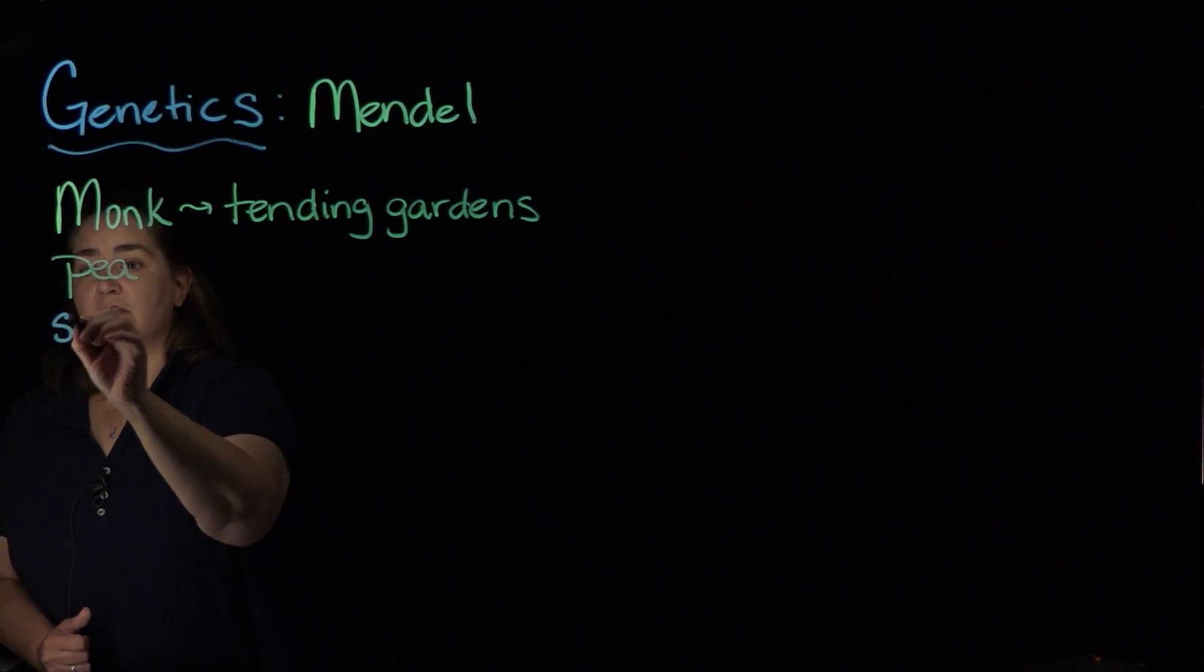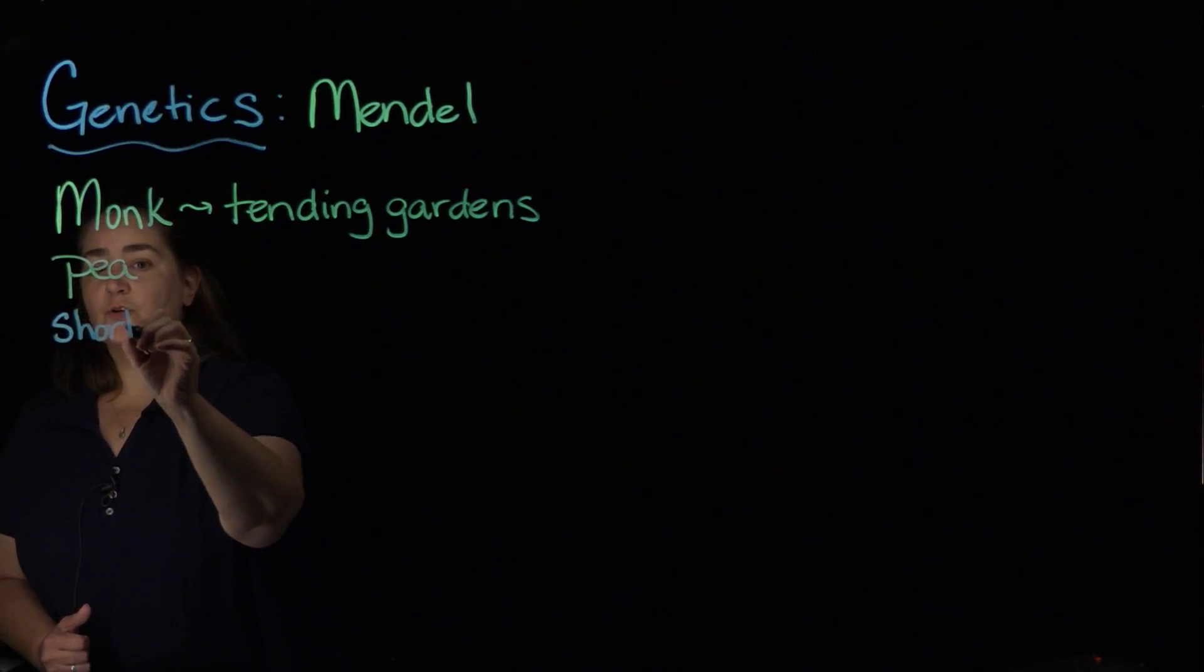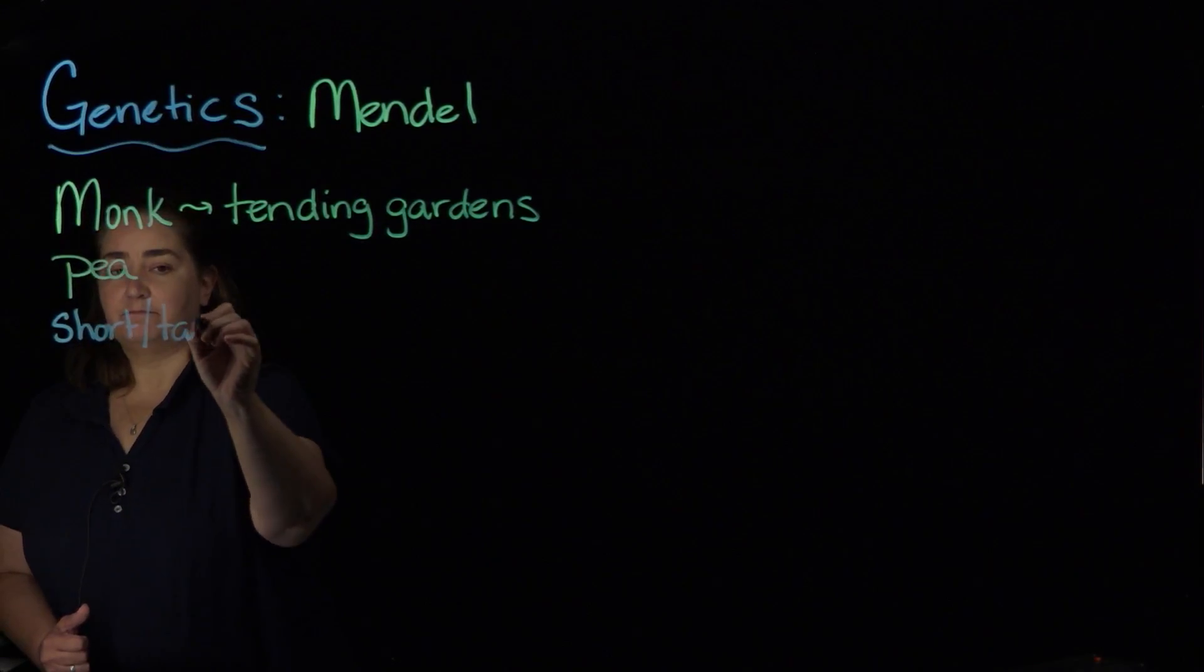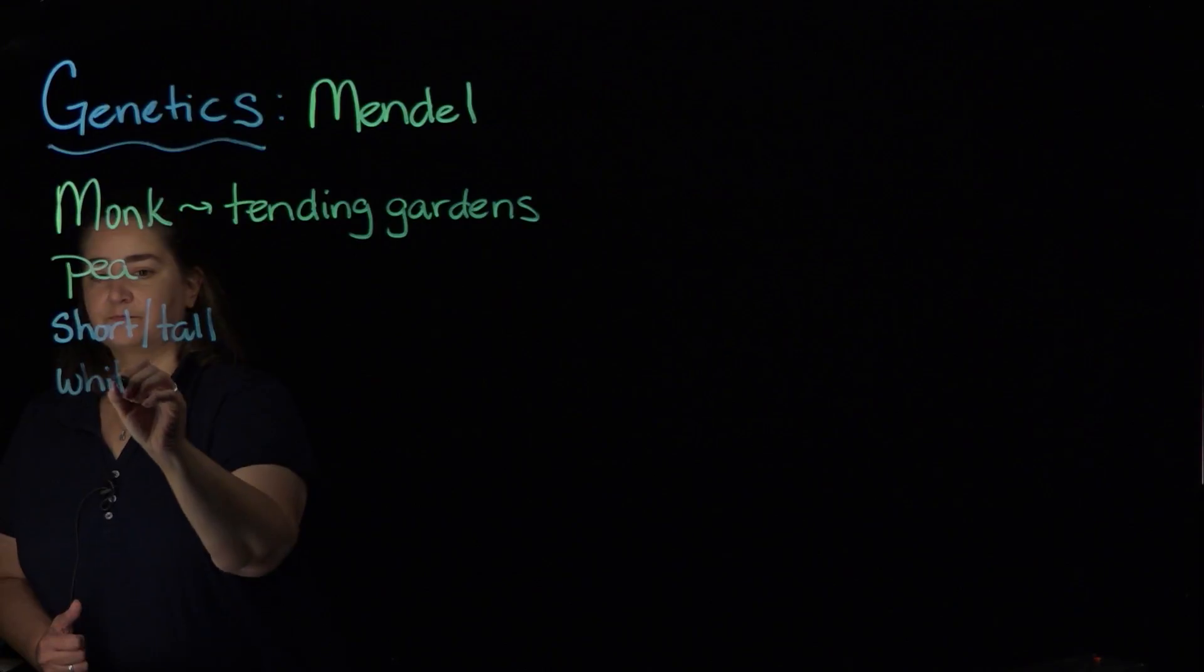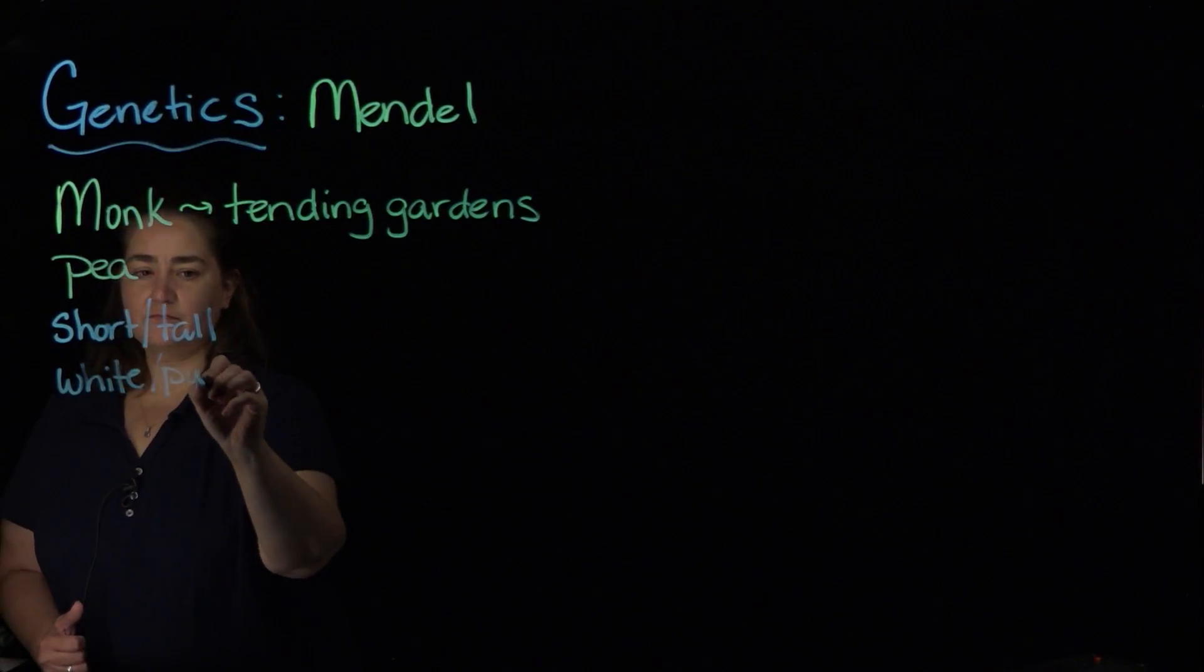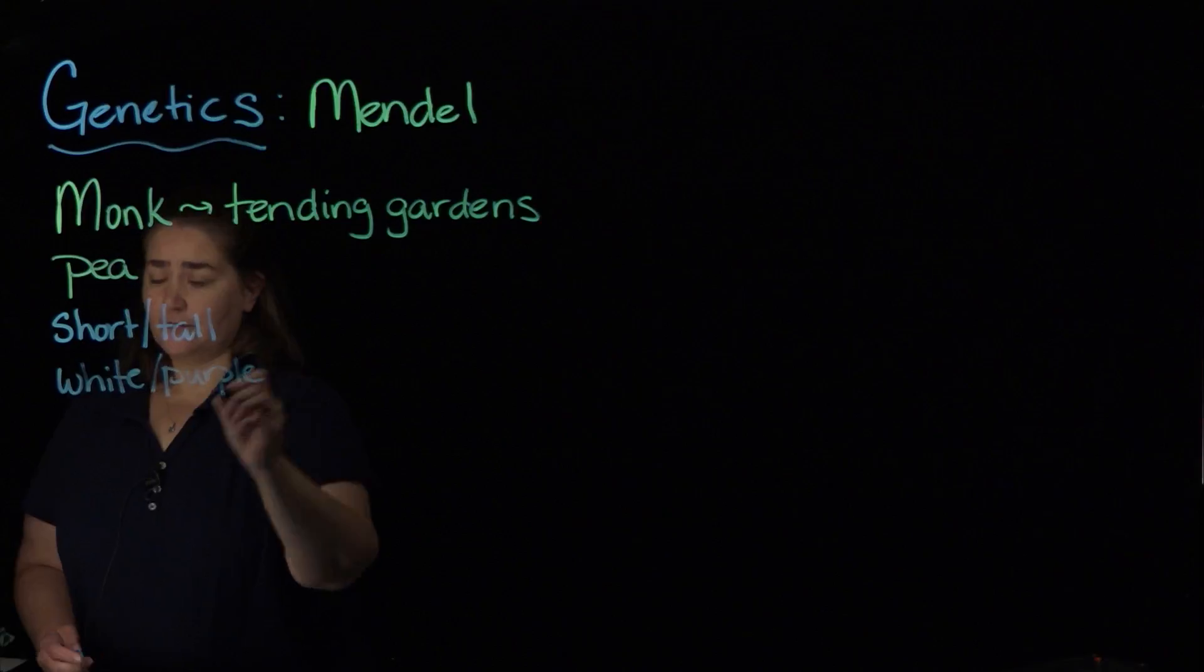What he observed was he noticed that the pea plants that he was tending had some different characteristics. He noticed some of the plants were short, some were tall, some had white flowers, some had purple flowers.